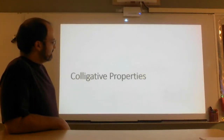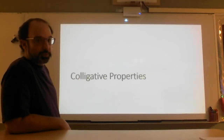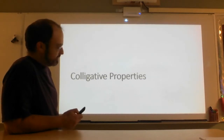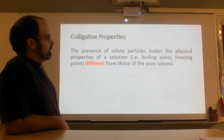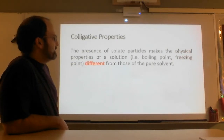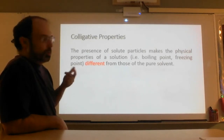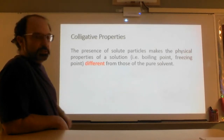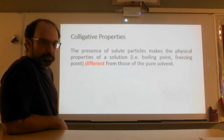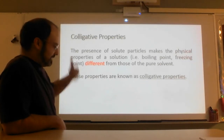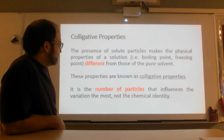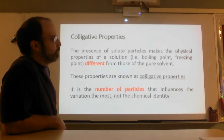Welcome back, ladies and gentlemen. We are going to be continuing with colligative properties — it's a weird word, colligative properties. All right, let's get right into it. Colligative properties: what are they? The presence of solute particles makes the physical properties of a solution — the boiling point, the freezing point, all that kind of stuff — different than those of a pure solvent. These properties are known as colligative properties. It is the number of particles that influences the variation the most, not the chemical identity, a.k.a. what the chemical is.